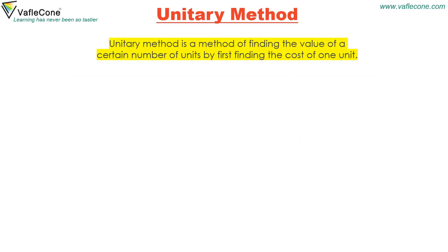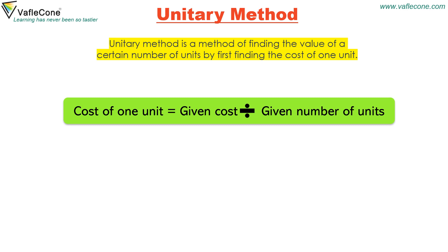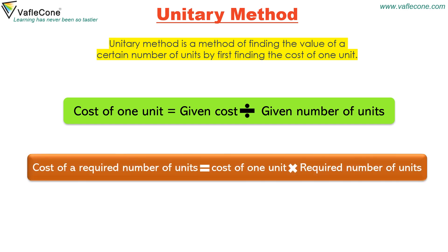Unitary method. Unitary method is a method of finding the value of a certain number of units by first finding the cost of one unit. Cost of one unit is equal to given cost divided by given number of units. Cost of a required number of units is equal to cost of one unit multiplied by required number of units.